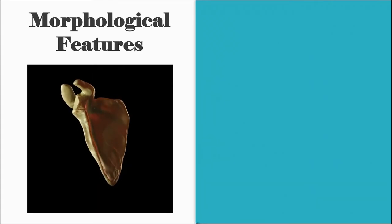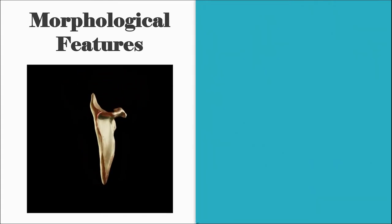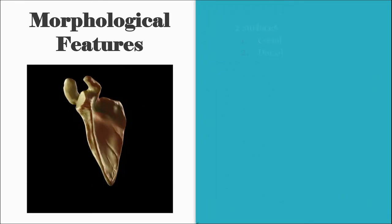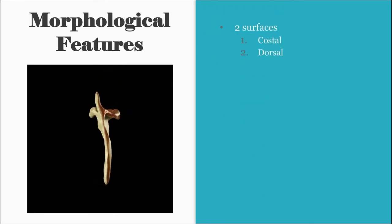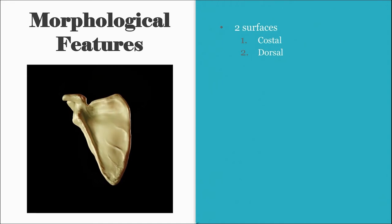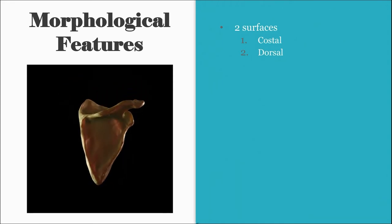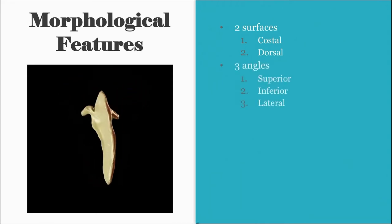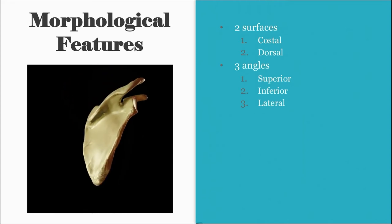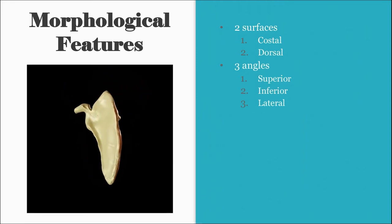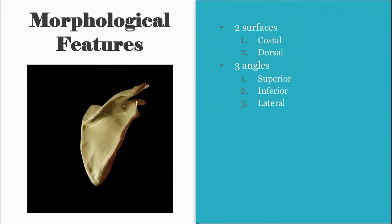The scapula consists of two surfaces: the costal or anterior surface, and the dorsal or posterior surface. There are three angles: the superior angle, the inferior angle, and the lateral truncated angle, which bears the glenoid cavity.